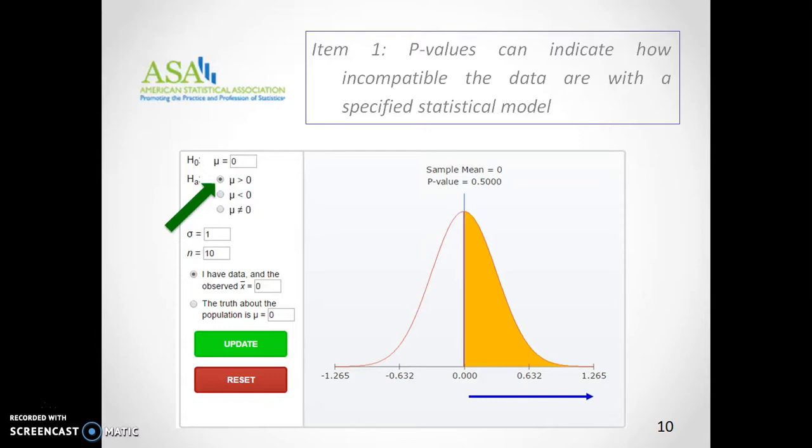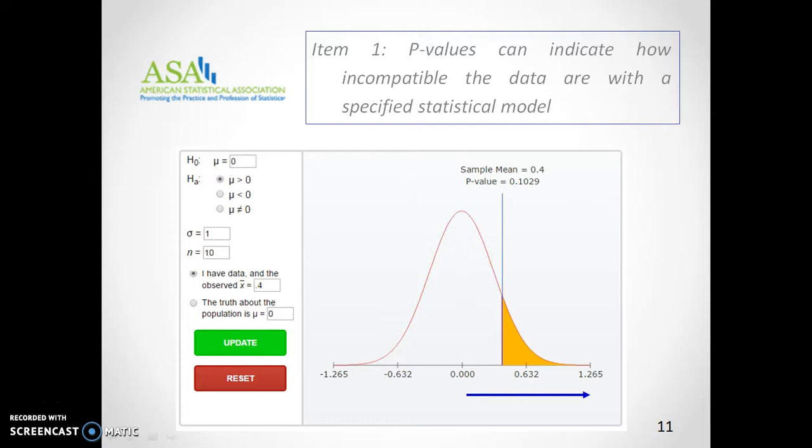The p-value measures the probability of obtaining samples whose means are greater than or equal to the observed mean in a scenario involving a draw. For example, if the observed mean turns out to be zero, there is a one-half probability of obtaining samples whose means are greater than or equal to zero. Under the same hypothetical scenario, if the observed mean were 0.04, this probability would be around 10%.